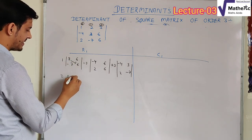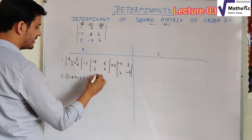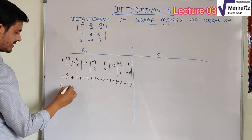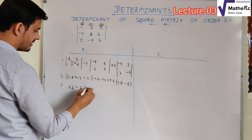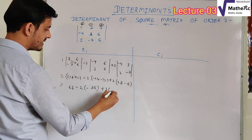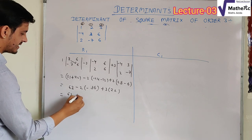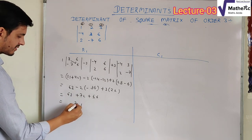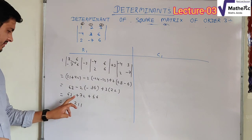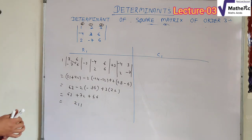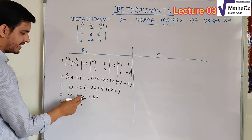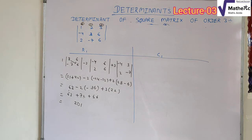Calculating the R1 expansion: 1×(3×6 − 6×(−7)) − 2×(−4×6 − 6×2) + 3×(−4×(−7) − 3×2). This gives: 1×(18+42) − 2×(−24−12) + 3×(28−6) = 1×63 − 2×(−36) + 3×22 = 63 + 72 + 66 = 201. So the determinant value with respect to R1 is 201.